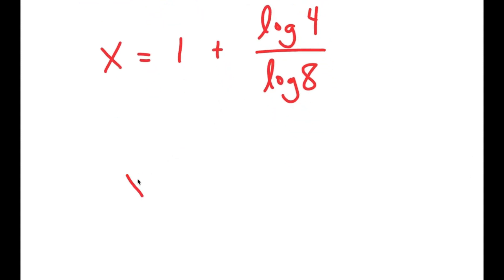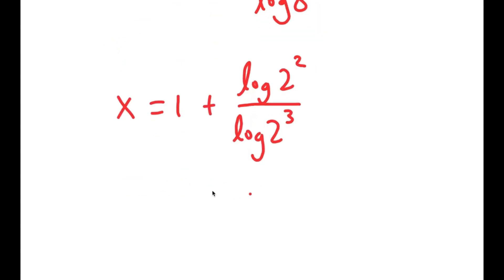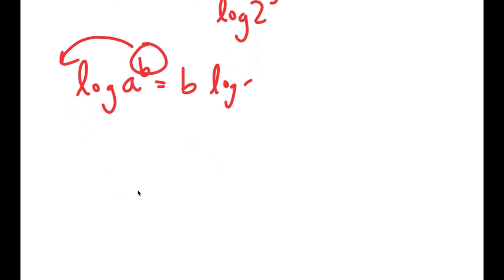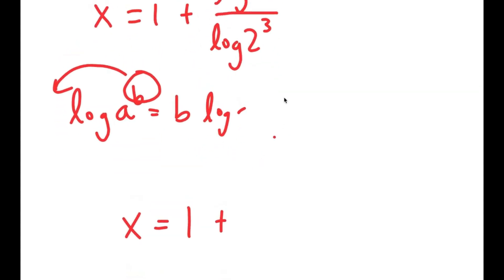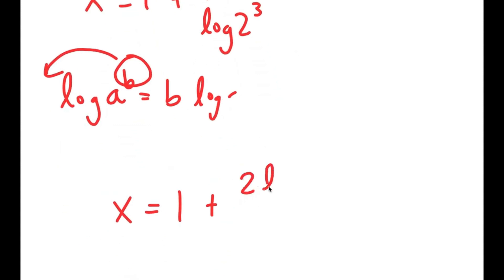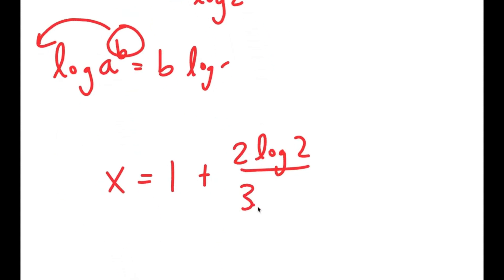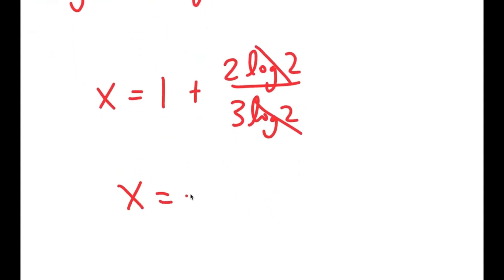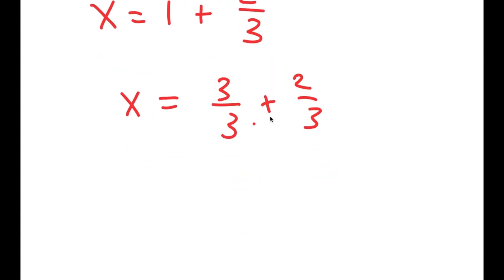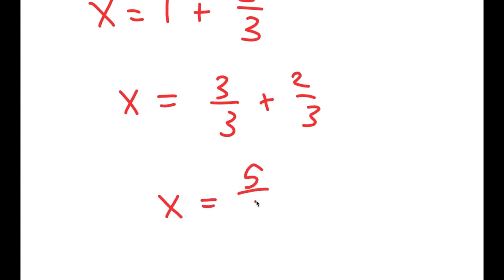Now, log of 4 is the same thing as log of 2 squared, and log of 8 is the same thing as log of 2 to the power of 3. If I have something in the form log of a to the power of b, I can move b to the front to get b times log a. So I get x is equal to 1 plus 2 times log 2 over 3 times log 2. These two cancel out and I get x is equal to 1 plus 2 over 3, which equals 3 over 3 plus 2 over 3, which is 5 over 3. So x is 5 over 3.